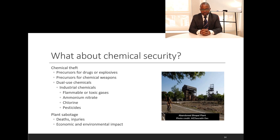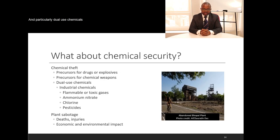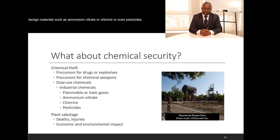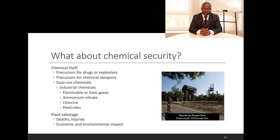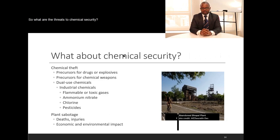In terms of security, chemicals can be targeted through theft or sabotage, and dual use chemicals are of particular concern. Benign materials such as ammonium nitrate, chlorine, or pesticides — known precursors to some weapons — should be taken more seriously. Sabotage is also well documented and can be driven by economic reasons, where an individual seeks to disrupt the operation of a chemical plant, making chemical security protection essential.